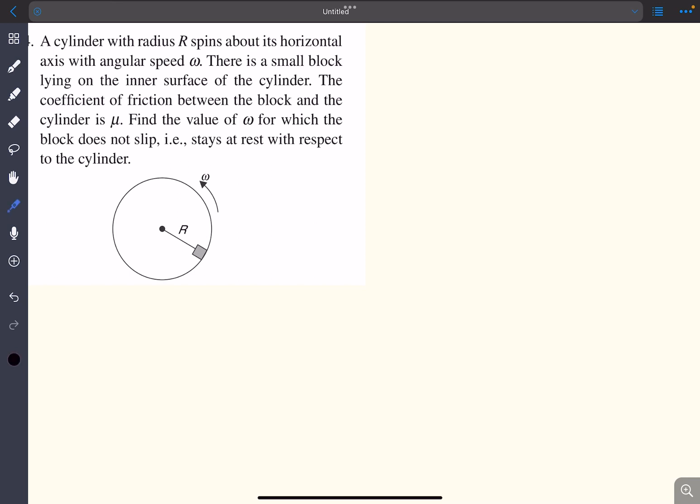In this question we have a cylinder of radius R that is spinning about a horizontal axis with an angular speed of omega. There is a small block lying on the inner surface of the cylinder. The coefficient of friction between the block and the cylinder is mu. We have to find the value of omega for which the block does not slip with respect to the cylinder.